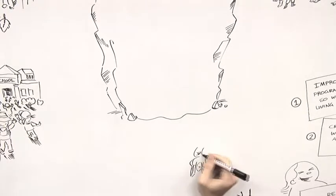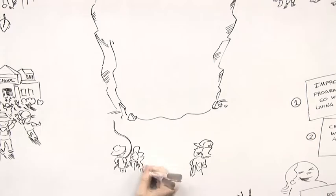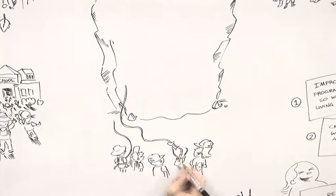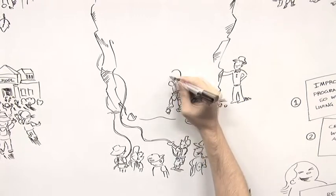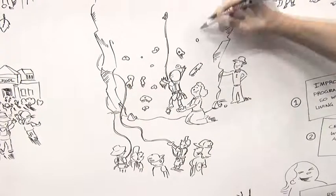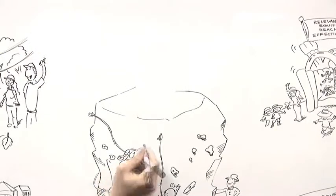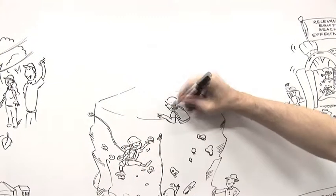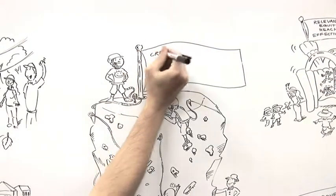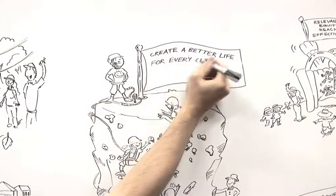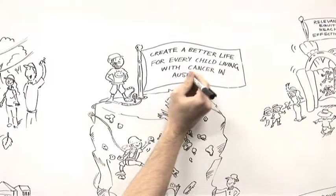To support our expansion, we will also need to build even stronger, more sustainable and diverse revenue streams. In order to deliver this, we need your help. With your support, we will make a lasting difference in the lives of the children and families we support. Right now is your opportunity to play a significant role in helping us create a better life for every child living with cancer in Australia.